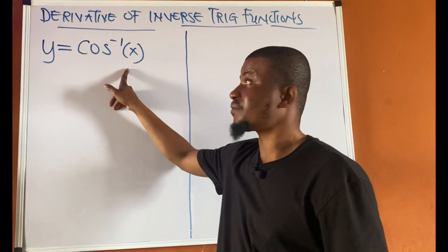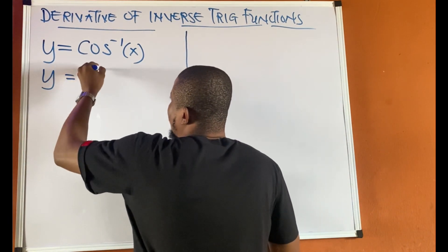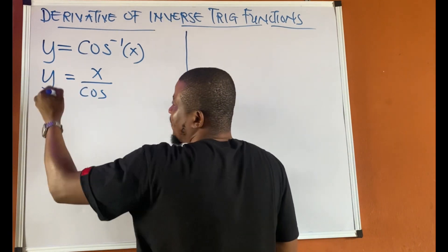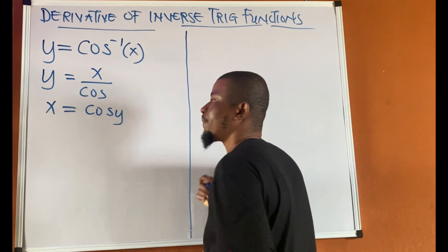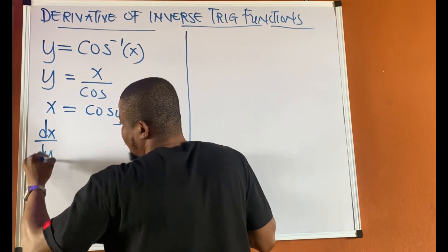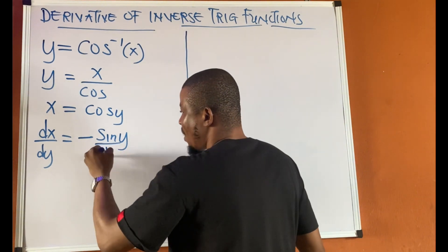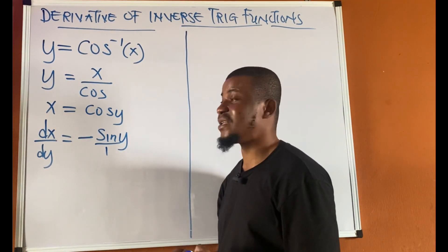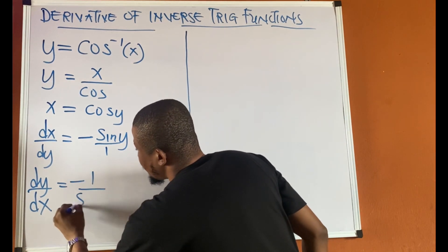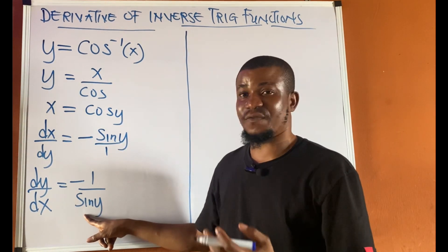Now let's look at y equal to cos inverse of x. We want to find dy/dx. Like before, we can write this as x equal to cos y. Differentiating cos y with respect to y gives negative sine y. So dx/dy equals negative sine y, and we invert to get dy/dx equals negative 1 upon sine y.